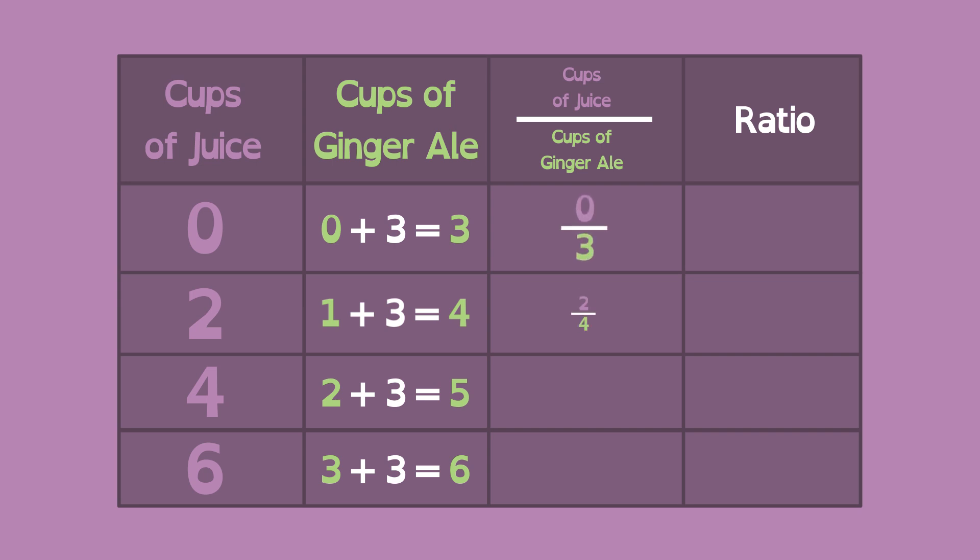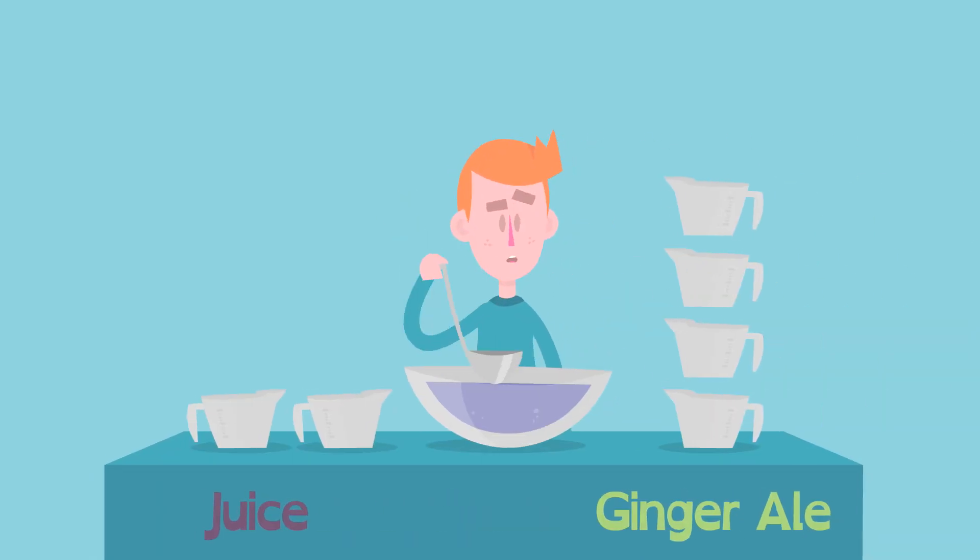But if we do that, the ratio of juice to ginger ale is no longer constant. The two quantities don't increase at the same rate. This is not direct proportionality. And Carl's punch won't taste so great.